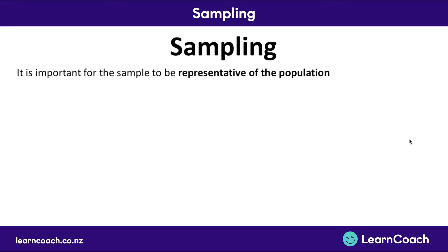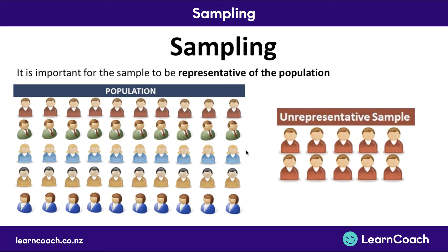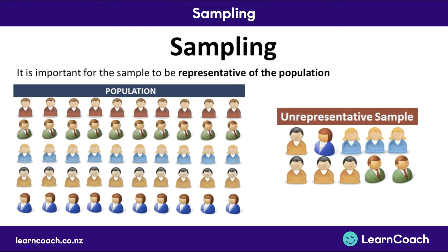It's really important for the sample to be representative of the population. For example, if this was a population with many different types of people each making up 20% of that population, an unrepresentative sample would be one that only includes people in the red shirts — that doesn't represent the whole population. Another example of an unrepresentative sample is slightly better than the last one, but the proportion of the different types of people in the sample is very different to the proportion in the actual population, so it's not representative.